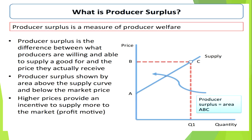The producer surplus is the quantity of produce which is or can be made available by the farmer to the non-farm populations. According to price, producer surplus is the difference between what producers are willing and able to supply a good for and the price they actually received.